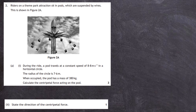Question 2 from the 2019 Advanced Higher Physics SQA exam. Riders in a theme park attraction sit in pods which are suspended by wires, as shown in figure 2a. During the ride, a pod travels at a constant speed of 8.8 meters per second in a horizontal circle. The radius of the circle is 7.6 meters and, when occupied, the pod has a mass of 380 kilograms. For three marks, we're asked to calculate the centripetal force acting on the pod.